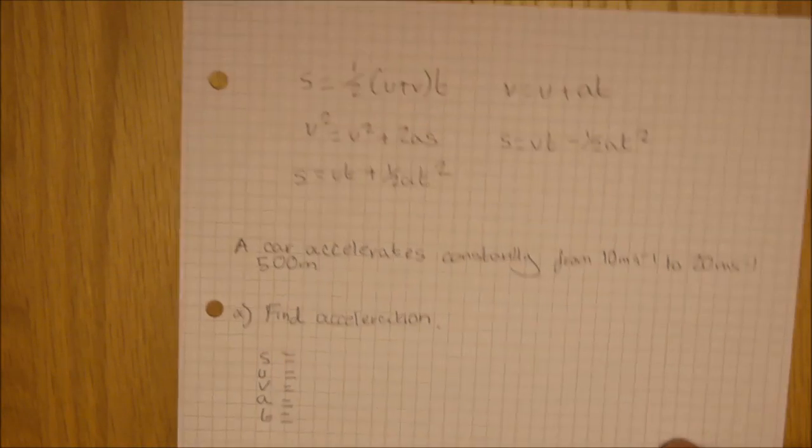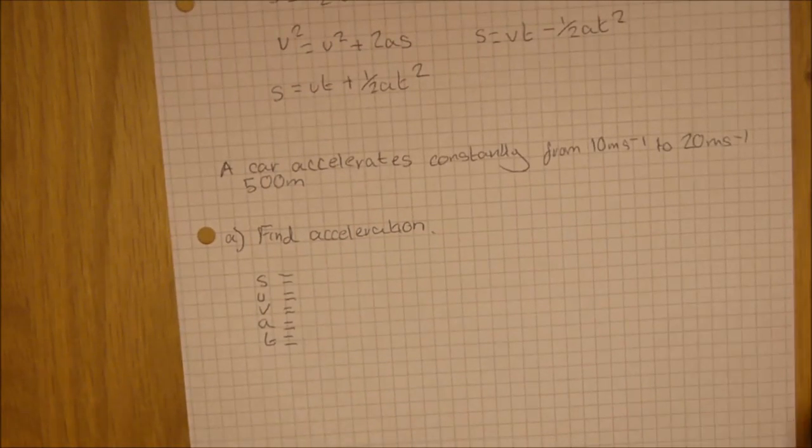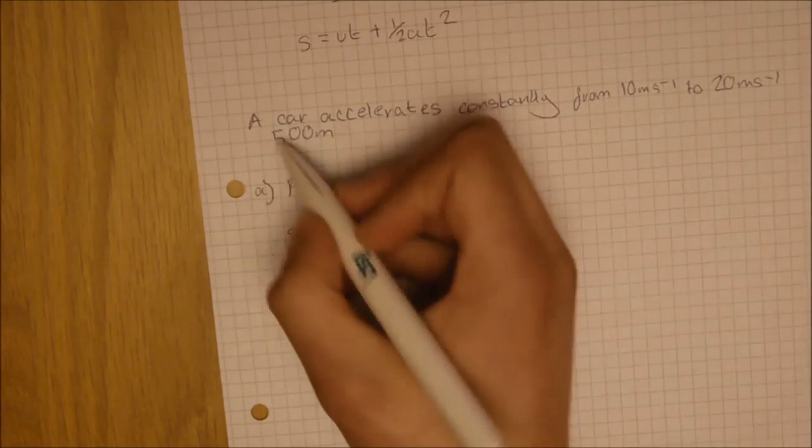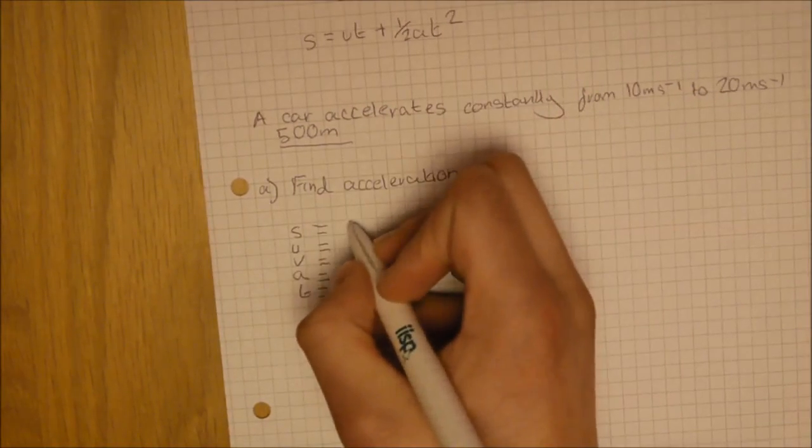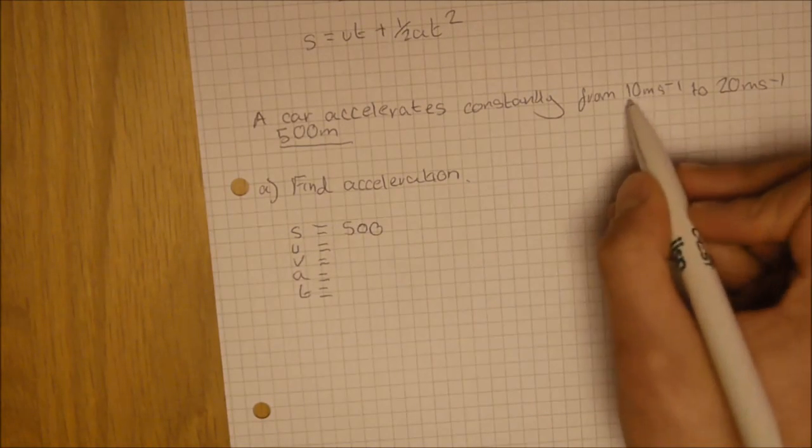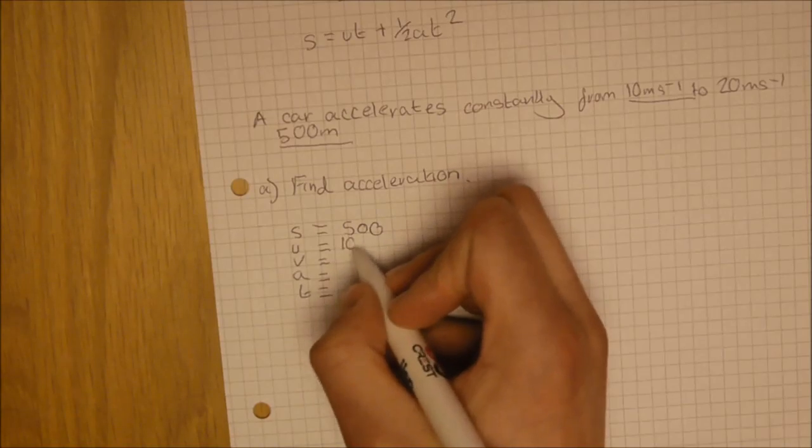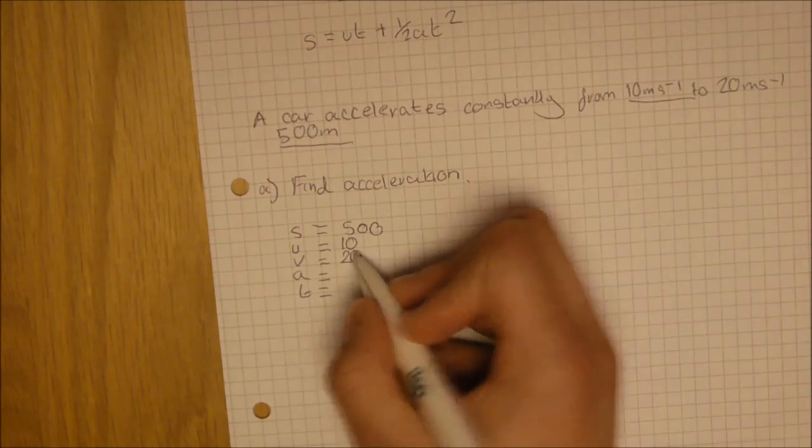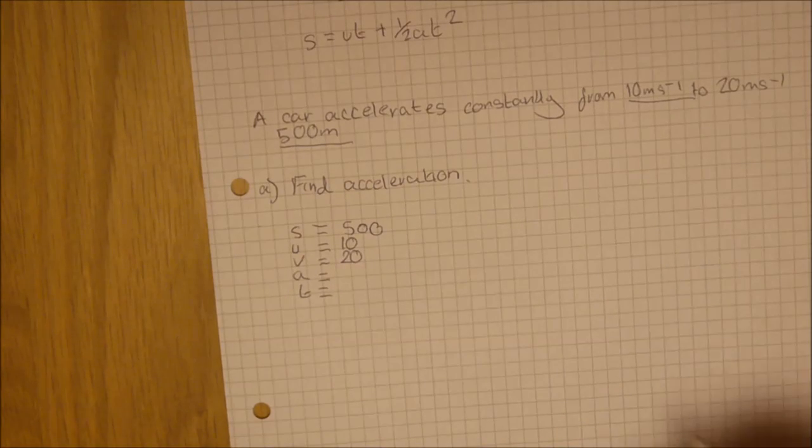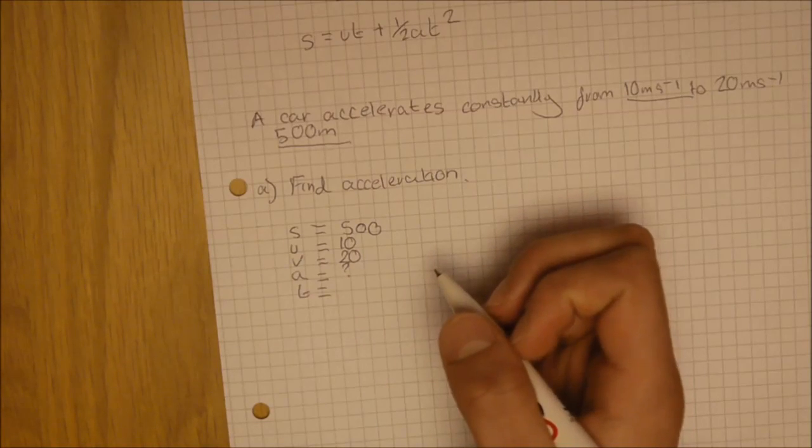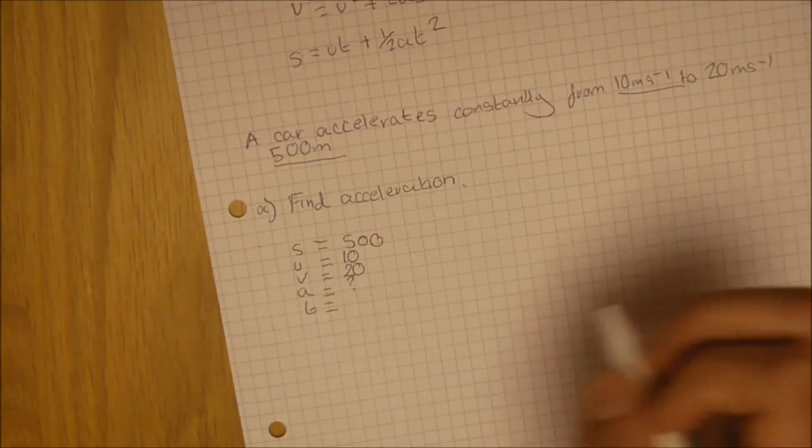Sorry, I should have explained that before, but it will be explained again in the future and on future videos. So S is distance. Do we have distance? Well, yes, we do. It's 500 meters. Do we have initial velocity? Yes, we do. It's 10 meters a second. Do we have final velocity? Yes, we've got 20. Do we have acceleration? No, we need to find it. Do we have time? No, we don't. But time is kind of irrelevant.